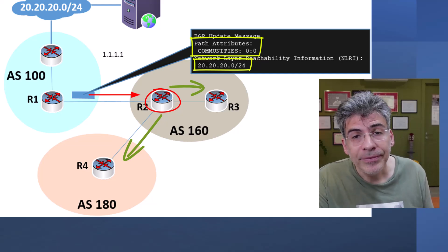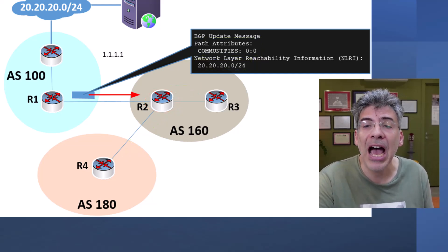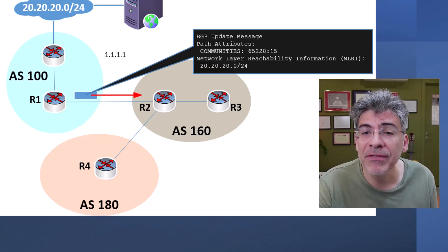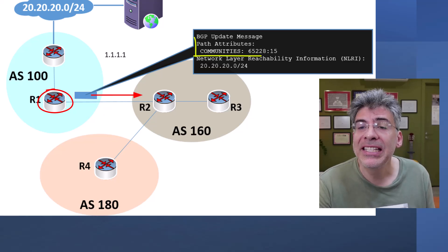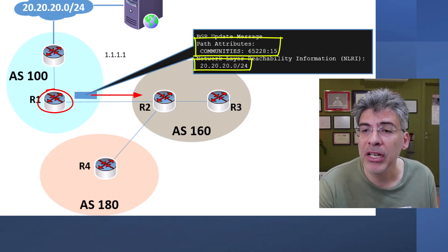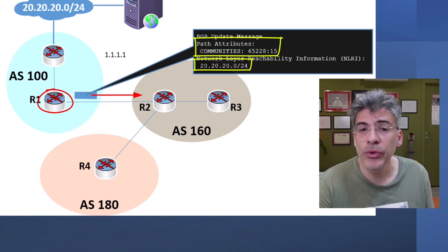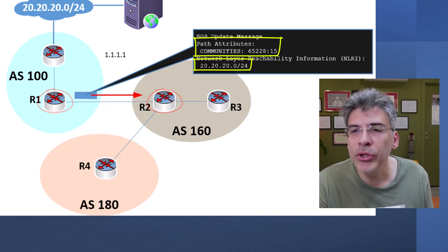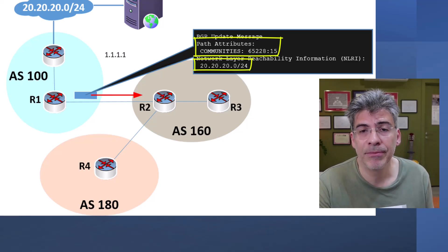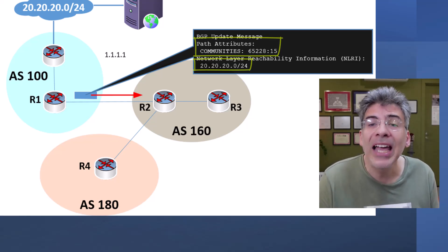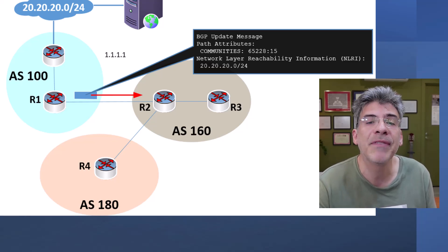So far we've seen the well-known communities and how they're applied. What about customized communities — how are those applied and how can they be useful? Let's say R1 is configured to add the community 65.228:15 to the 20.20.20.0/24 route, which is then advertised to R2. There are a multitude of things you can do with this, and I'll give you some examples to show the great variety of ways you can manipulate BGP routing using communities.